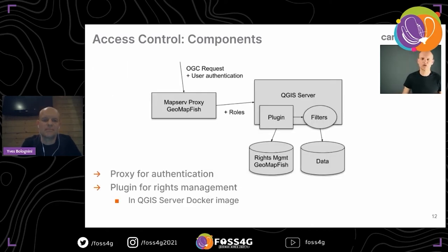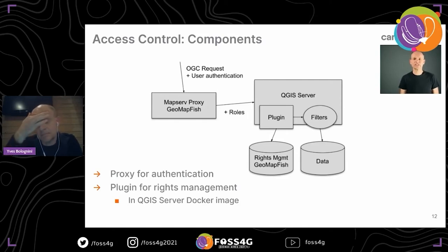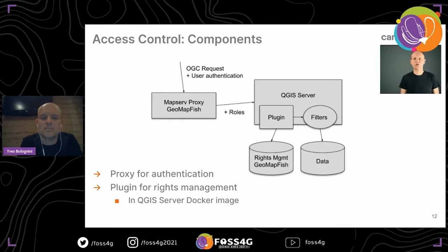Here is the architecture of the access control with QGIS Server and GeoMapFish. The OGC request comes either from GeoMapFish or from QGIS Desktop, and we have user authentication. First, a MapServ proxy — which is a component of GeoMapFish — adds roles to the request and sends it to QGIS Server. QGIS Server then has another component, a plugin, which uses the role information and gets the rights from the rights management database of GeoMapFish.